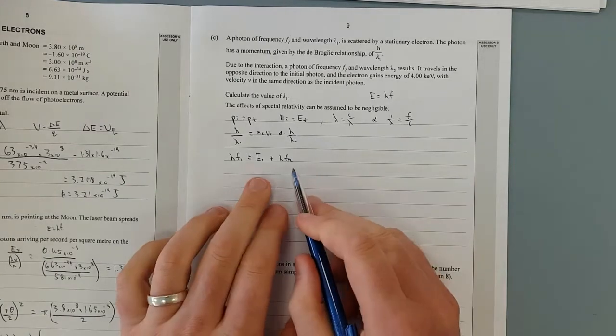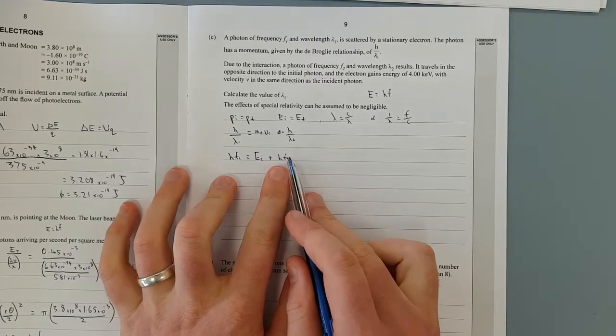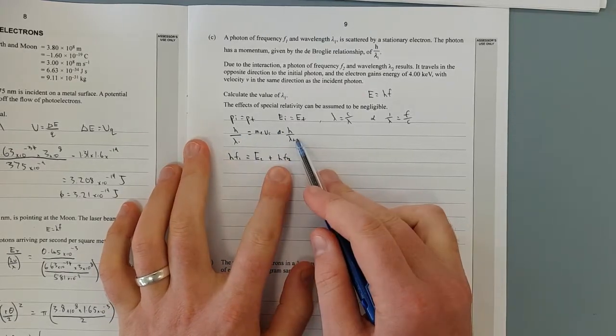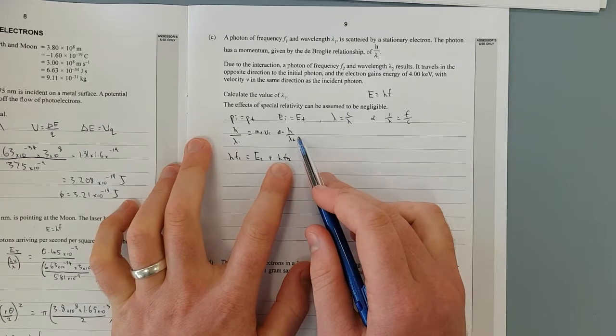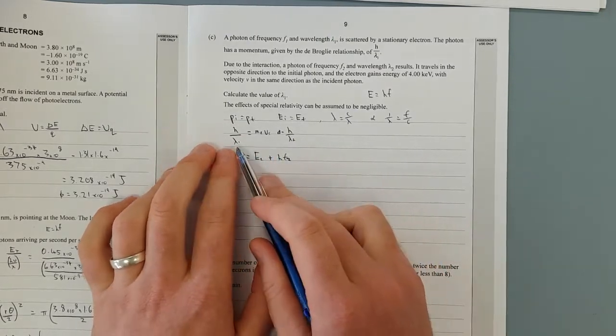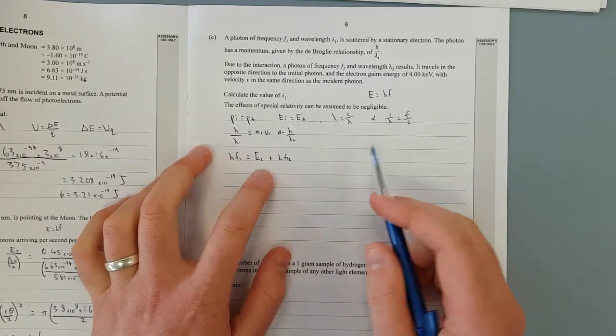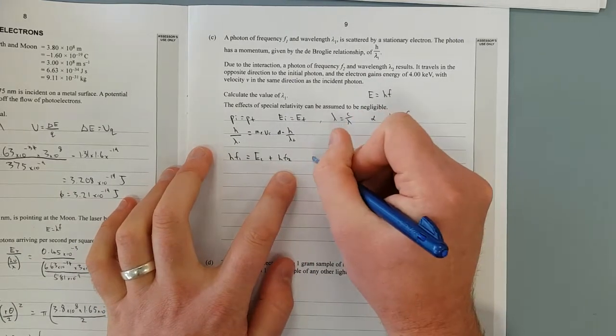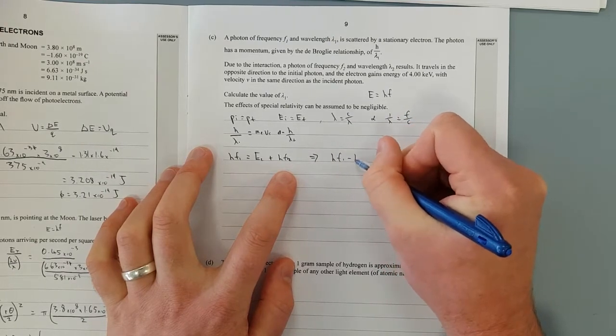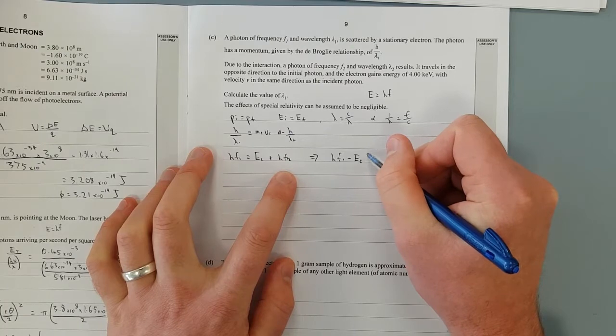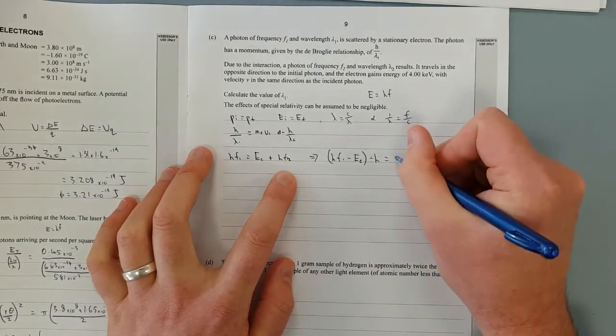I want to solve for lambda 1. So what I'm going to do is rearrange this here for f2, substitute that into this momentum formula, similar to what we did, well kind of the opposite to what we did in question 2. And then we should have an expression for f1, we can find lambda 1. So we'll do that now. We'll rearrange this here for f2. So that equals HF1 minus energy of the electron, and we'll divide this by h, because when I get left with f2.